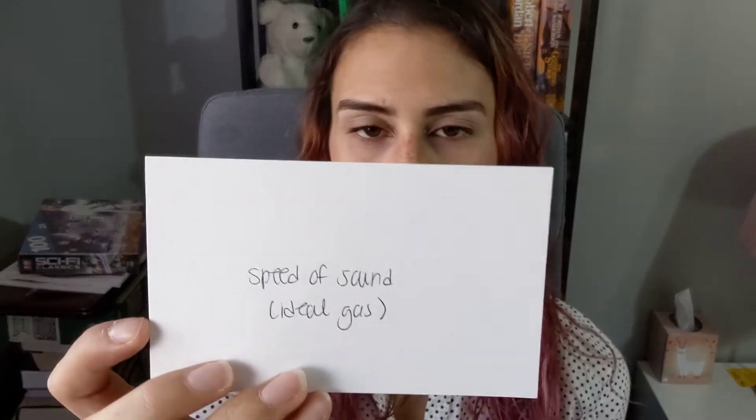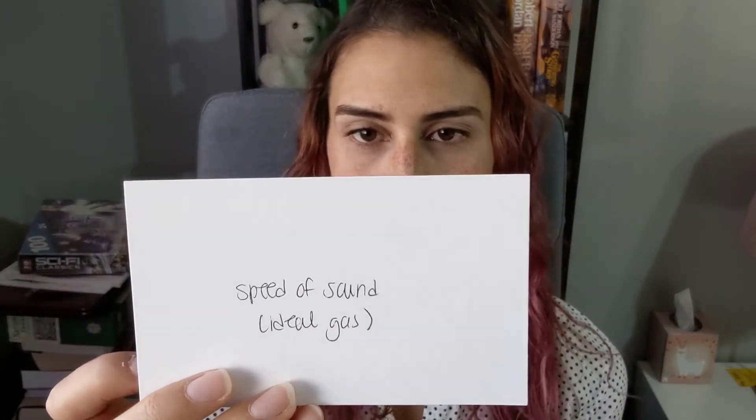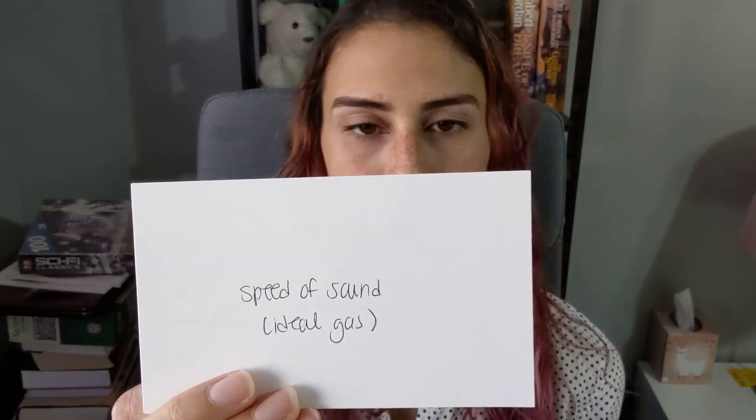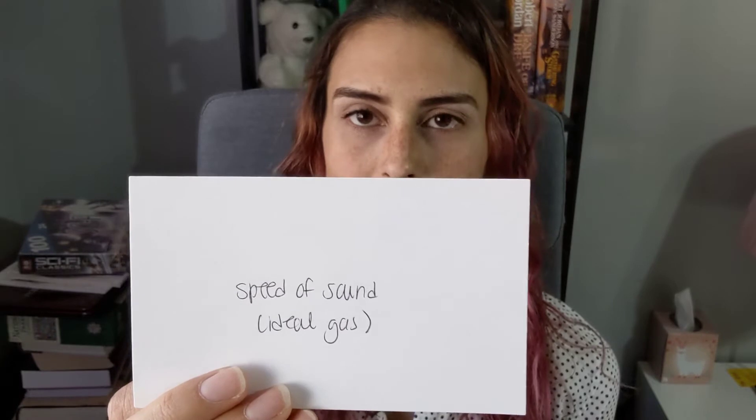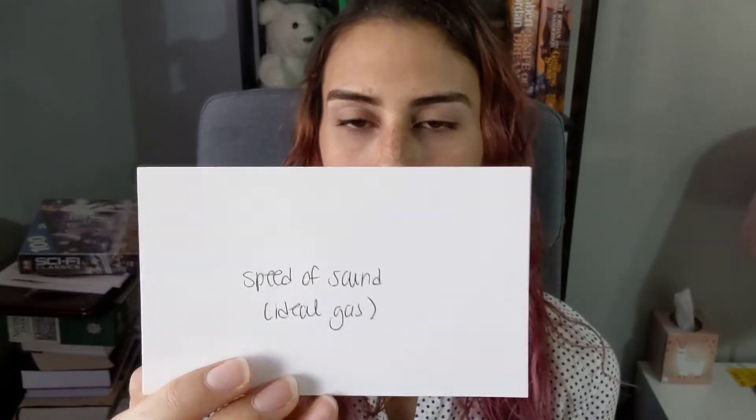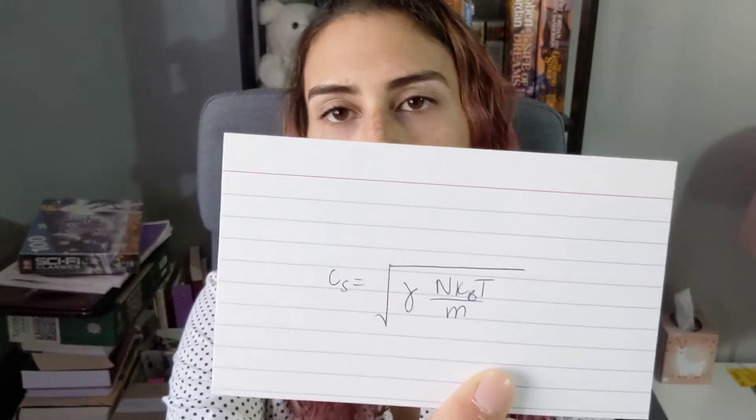The speed of sound in an ideal gas, C sub s, is given by the square root of gamma times N k_B T over m.